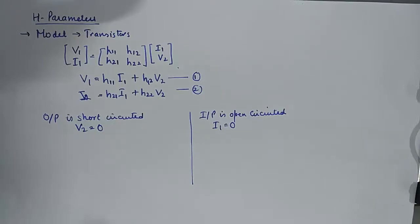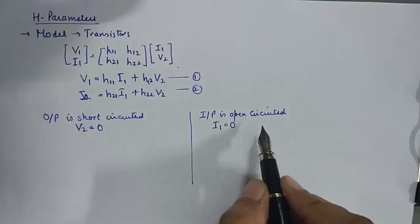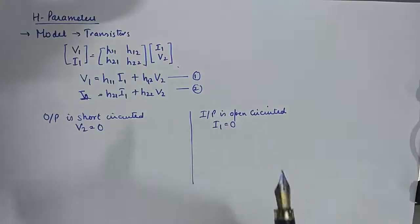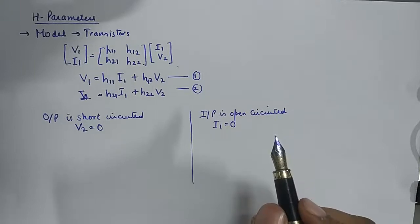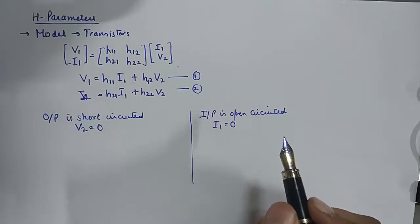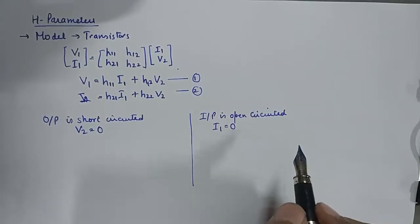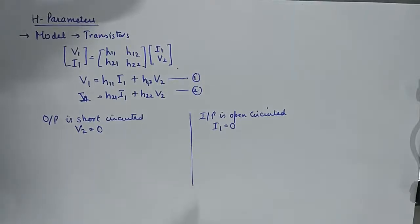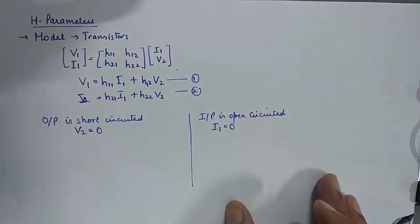Because it's a mix of both. The output is short circuited, the input is open circuited. In Z parameters, it was both input and output open circuited in both cases. In Y parameters, they were both short circuited in both cases. This is output is short circuited and input is open circuited. And you need to remember this very meticulously because when you study ABCD parameters, it is going to be exactly the reverse of this. I will talk about that in the next video.